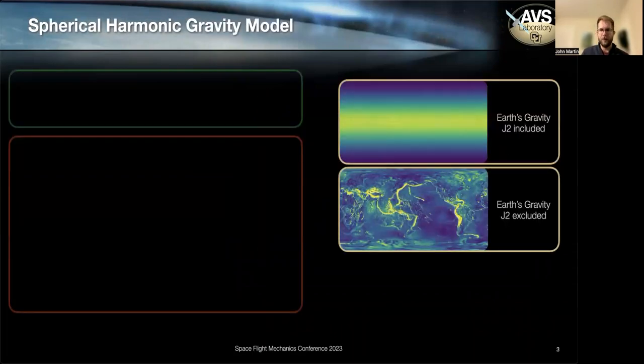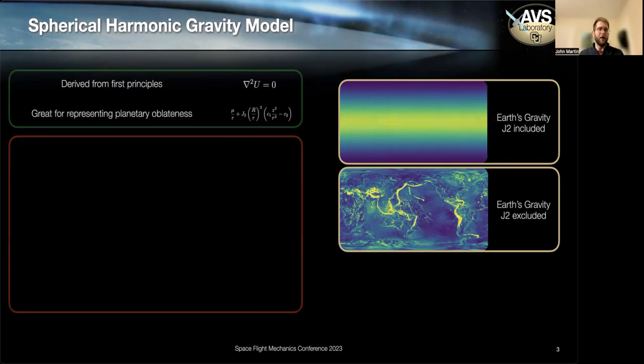In terms of pros, one of the great things about spherical harmonics is it's derived from first principles. It is one of the few analytic solutions we have to the differential equation, which is Laplace's equation. And the other really good thing about spherical harmonics is it's just frustratingly good at capturing planetary oblateness.